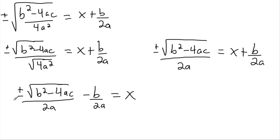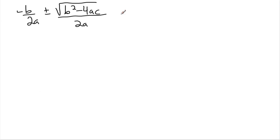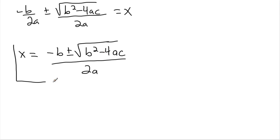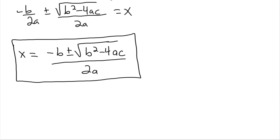So it's going to be minus b over 2a plus or minus square root of b squared minus 4ac, all over 2a. Since I've got a common denominator — something over 2a and something else over 2a — I can rewrite them both divided by the same thing, with x on the left and all the stuff on the right. And we've just derived the quadratic equation.